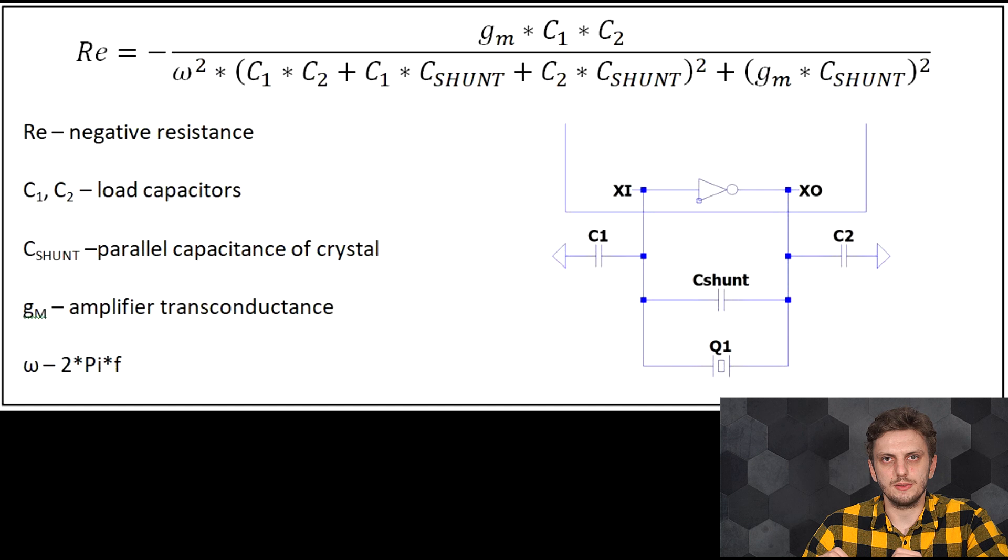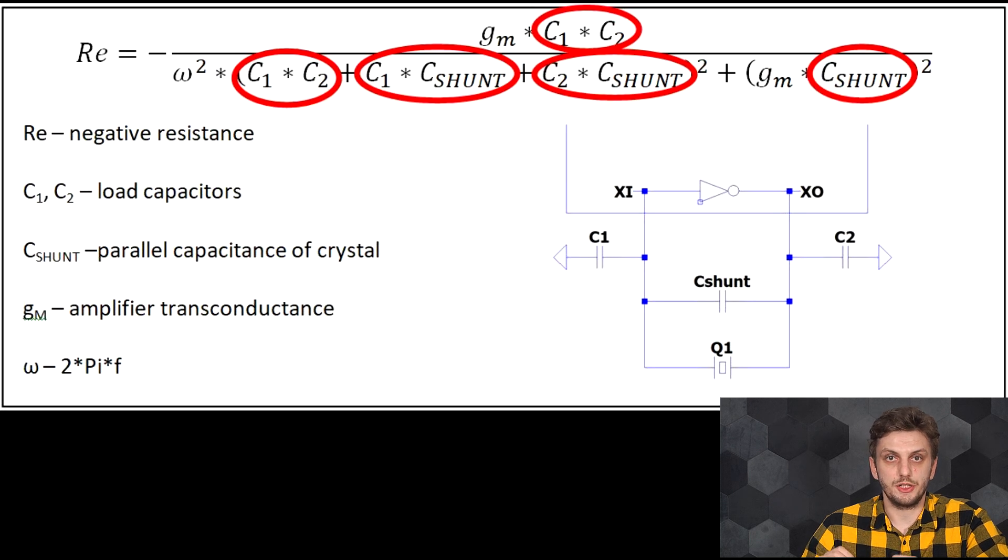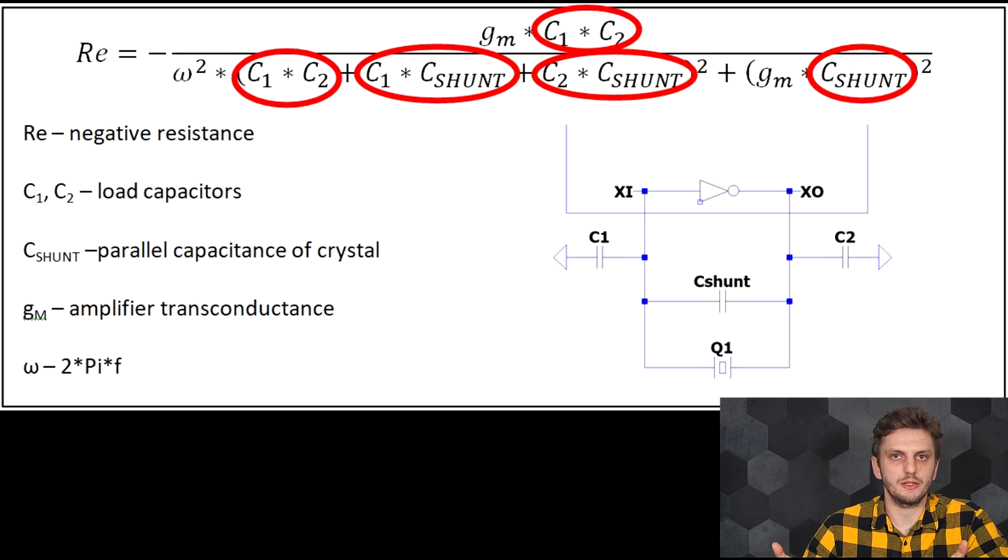And then we need to consider the mathematics behind this parameter. So without going into too many details, the negative resistance is a function of the load capacitors and the shunt capacitance of the crystal and layout. So once a circuit is built, these parameters are virtually constant. Very small variations with time and temperature can occur, but the negative resistance is also dependent on the amplifier's transconductance, and now this parameter is quite sensitive to temperature.